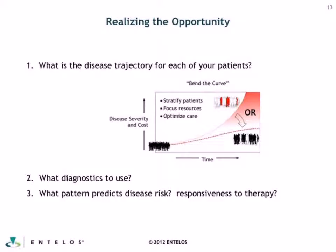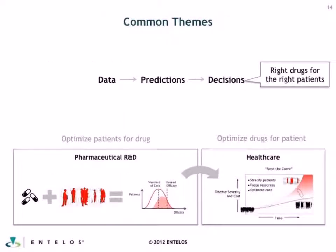Realizing this opportunity is very similar to issues on the pharma side, except here the predictive question is more about the patient than the drug. What is the disease trajectory each patient is on? What diagnostics would you use for a particular patient given your current state of information? What patterns predict disease risk and what patterns predict responsiveness to therapy? On the pharma side, you're trying to optimize patients for the drug; on the healthcare side, you're trying to optimize drugs for the patient.